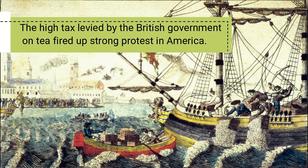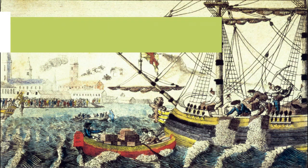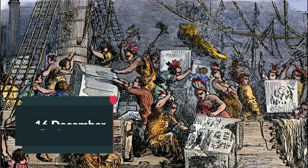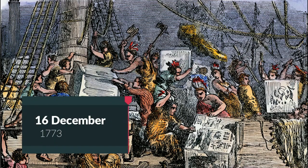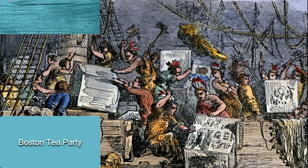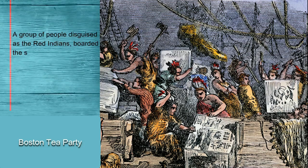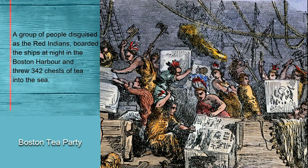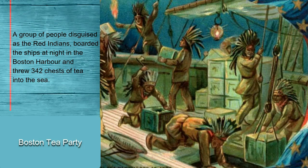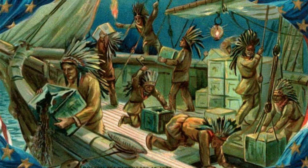One of the most important events during this time was the Boston Tea Party. The high tax levied by the British government on tea fired up strong protests in America. On 16th December 1773, a group of protesters disguised as Red Indians boarded ships at night in Boston Harbor and threw 342 chests of tea into the sea. This protest is known as the Boston Tea Party.